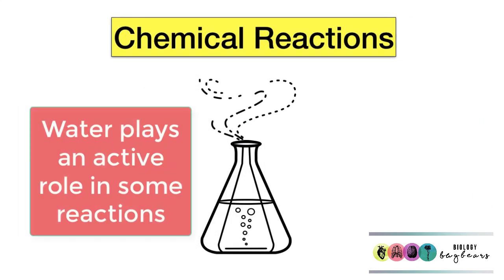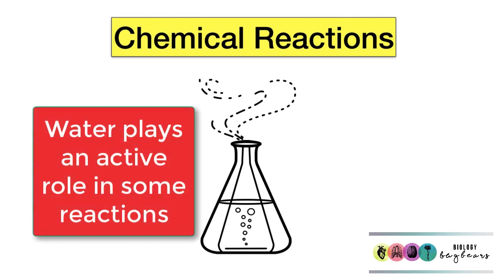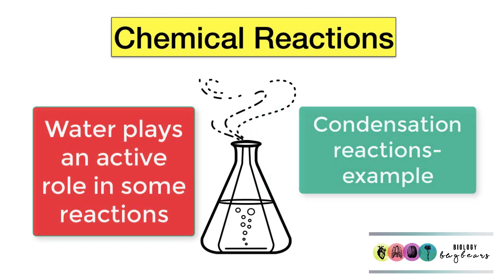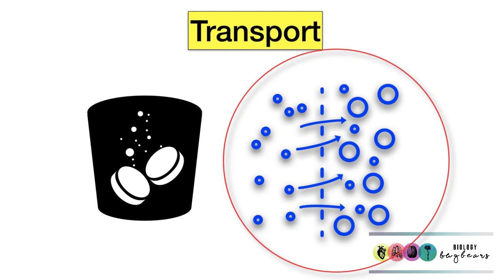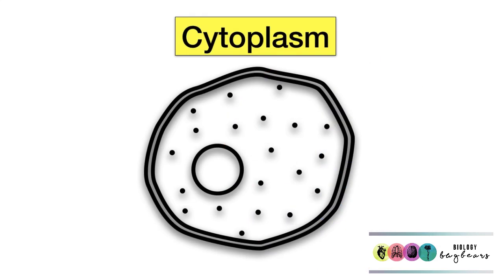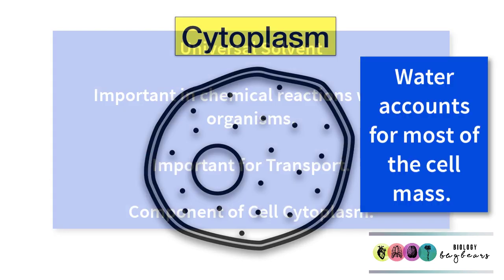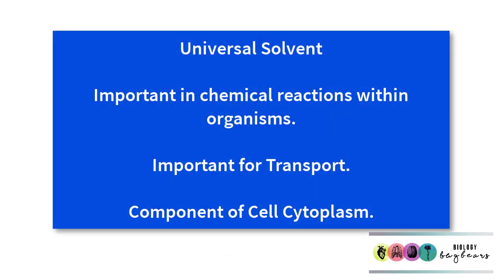Water also plays an active role in certain chemical reactions, such as condensation reactions. It also plays a role in transporting substances into and out of cells — many substances are transported around organisms dissolved in water. Finally, water is so important because cell cytoplasm, that liquid found inside all cells, is mostly made of water. To summarize: water is the universal solvent, it's important in chemical reactions within organisms, it's important for transporting substances, and it's a component of cell cytoplasm.